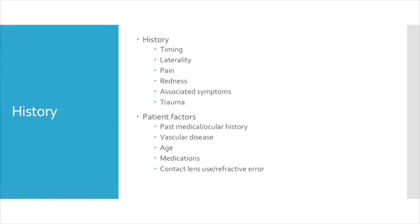Additionally, was it monocular or binocular? Associated with pain? There are few true causes of acute vision loss that cause pain. Optic neuritis can have pain, but with movement. Some anterior chamber processes can be involved in acute, but more likely subacute processes that can cause vision loss. Is there any redness associated? Are there other associated symptoms, for instance, neurological deficits, nausea and vomiting, or headache?